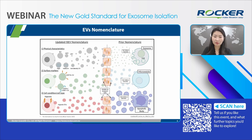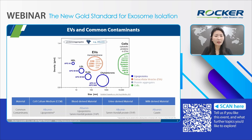To avoid confusion, I will use the term EVs throughout this presentation. EV isolation is complex due to contaminants in biological samples like cell debris, protein aggregates, and lipoproteins, which overlap in size and density with EVs. For example, when isolating EVs smaller than 200 nm, albumin and lipoproteins are common contaminants. This is why choosing the right isolation technique is so important to ensure reliable downstream analysis and maintain EV functionality.